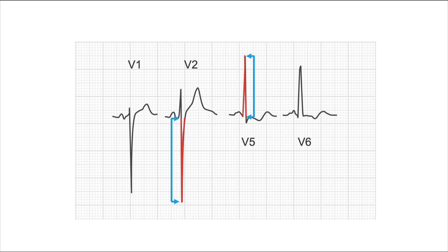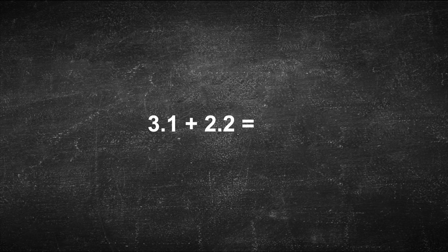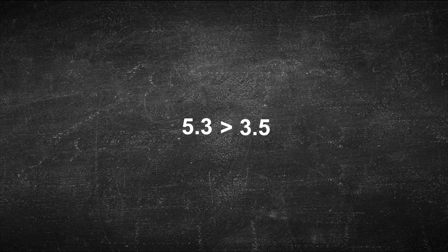The R in V5 is 2.2 millivolts, and the S in V2 is 3.1 millivolts. Let's add these numbers up. 3.1 plus 2.2 equals 5.3. If the number you have just calculated is over the threshold of 3.5 millivolts, then you have what we call a positive Sokolov index.